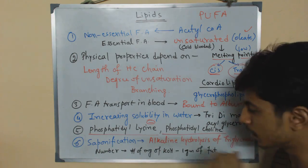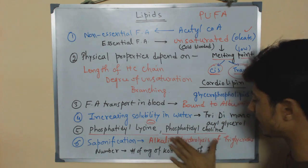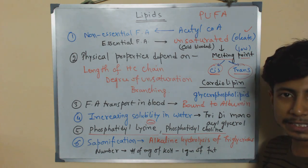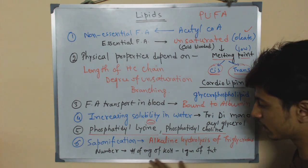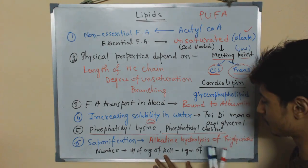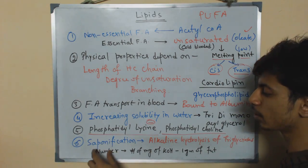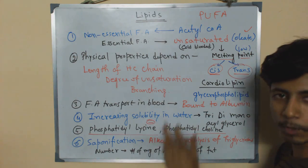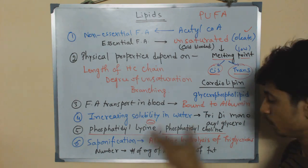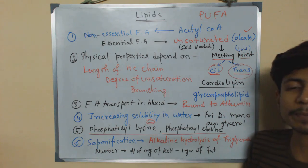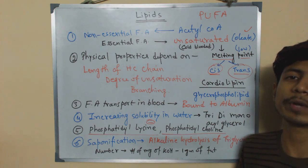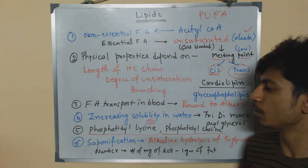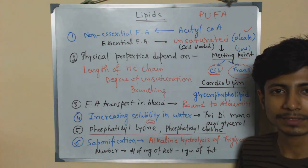Saponification refers to the alkaline hydrolysis of fat. The alkali used is potassium hydroxide (KOH). The saponification number is defined as the number of milligrams of KOH required to hydrolyze one gram of fat. This value gives us an idea of the molecular weight of the fatty acid.